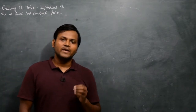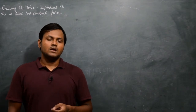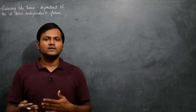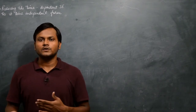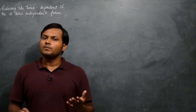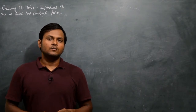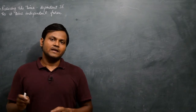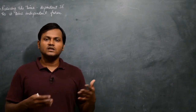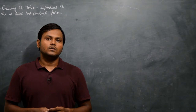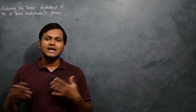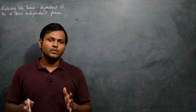In quantum mechanics, one of the most fundamental equations is the Schrödinger equation. If you want to study the evolution or trajectory of a quantum mechanical particle, the first thing you need to do is solve this Schrödinger equation. From the solution you can get an idea about many different physical quantities like position, momentum, velocity, acceleration, and all these different things associated with that particular system.